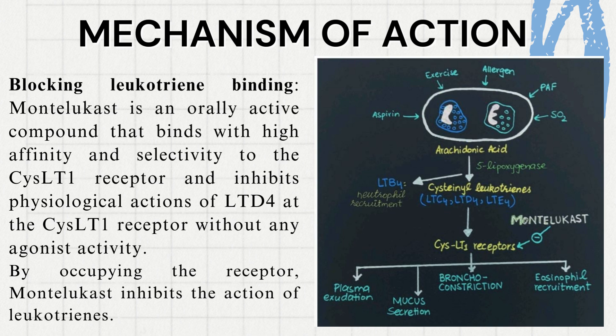Mechanism of Action: Montelukast binds with high affinity and selectivity to the cysteinyl LTR1 and inhibits the physiological actions of LTD4 without any agonist activity. By occupying the receptor, Montelukast inhibits the action of leukotrienes.